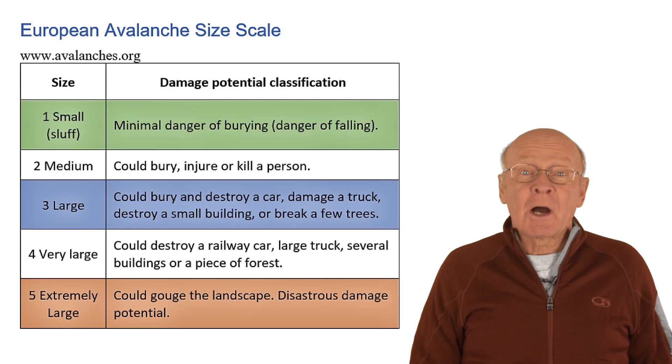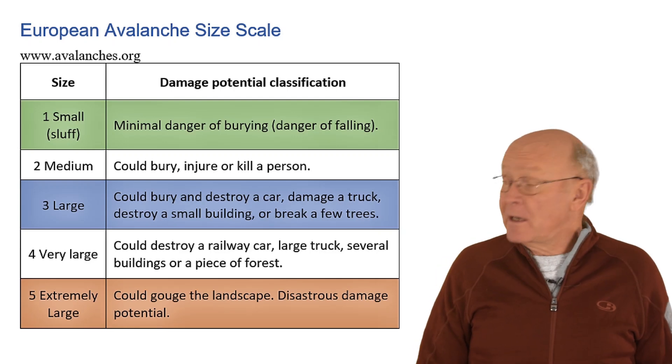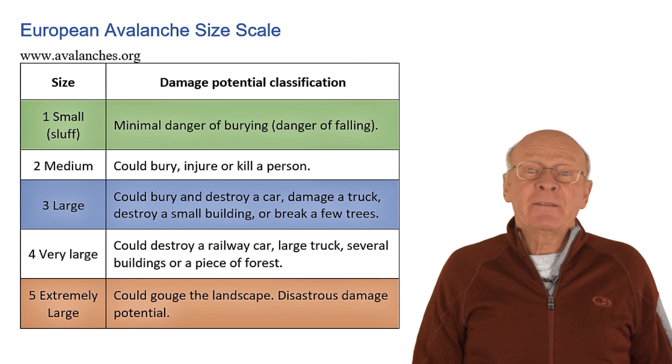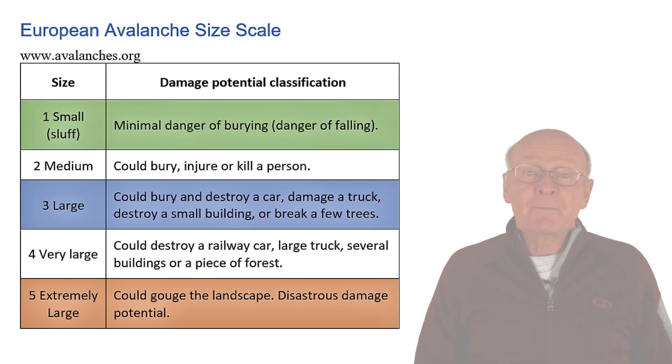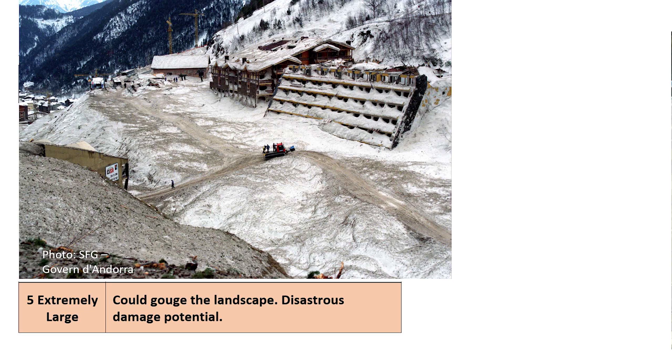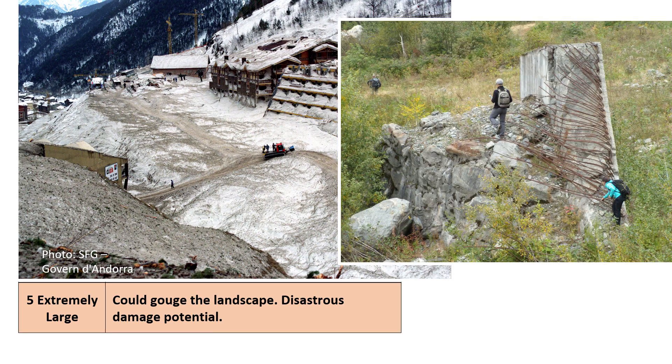Here are two columns of the avalanche size scale used in Europe. The damage potential caused by the five size classes range widely, from size 1 avalanches that would not bury a person but could push a person off a climbing route, to size 5 avalanches that can gouge the landscape and cause disastrous damage such as destroying a village or a reinforced concrete structure.